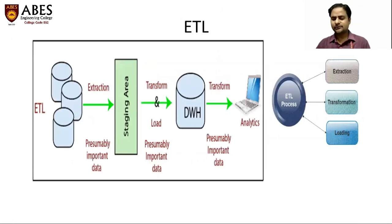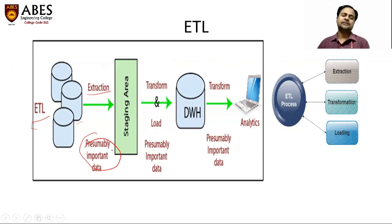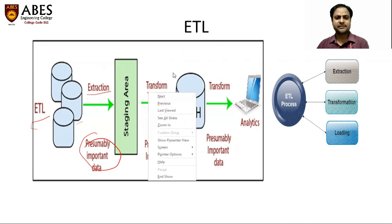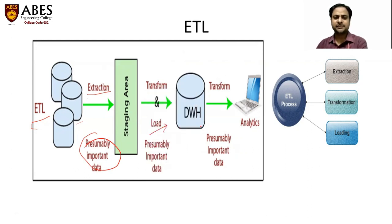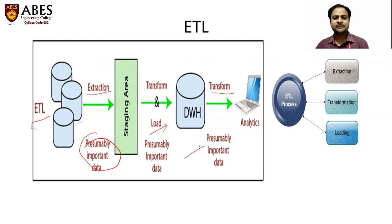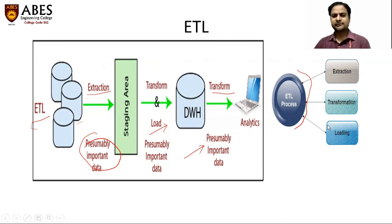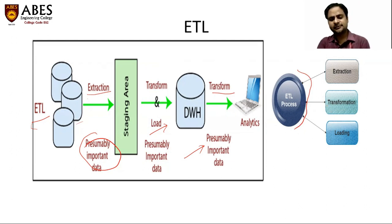In a diagrammatic form, we can understand the whole process: ETL operations are performed on pre-processed data. Data is first extracted from different sources, and in that we mainly nullify or ignore the less important data, and we focus on the presumably important data. On this extracted data, we apply the ETL operation — after extraction, the transformation operation is done, and then the load operation on the data warehouse machines or different engines. This important data is processed at three phases: extraction, transformation, and loading. ETL operations are important processes where data is pre-processed, structured, and made suitable for the machine.